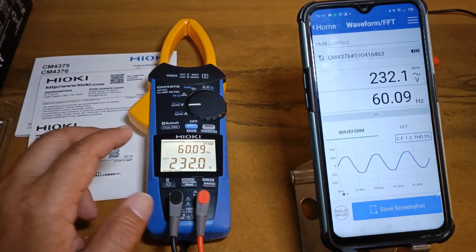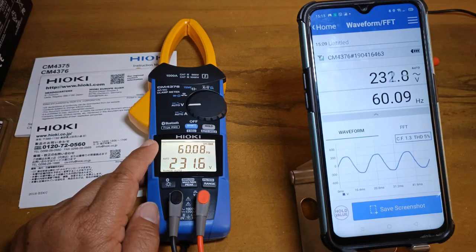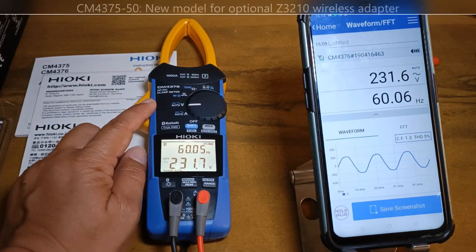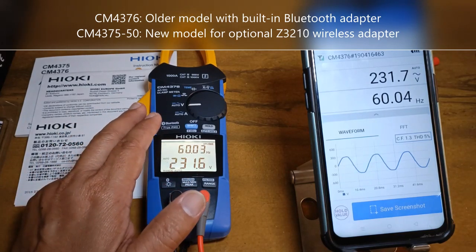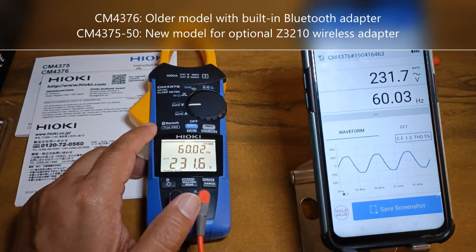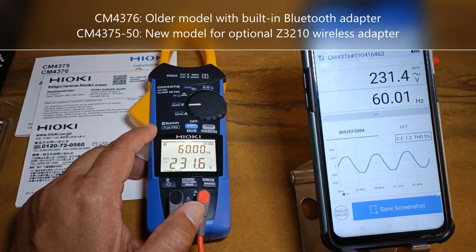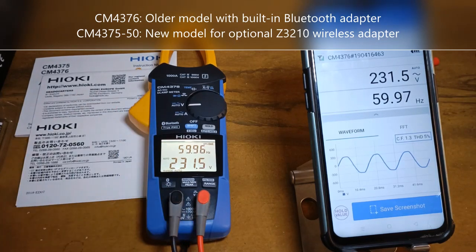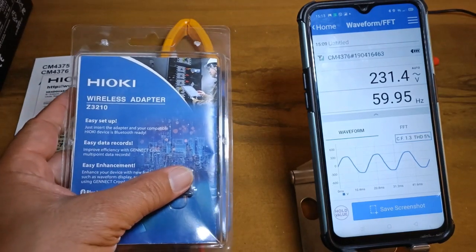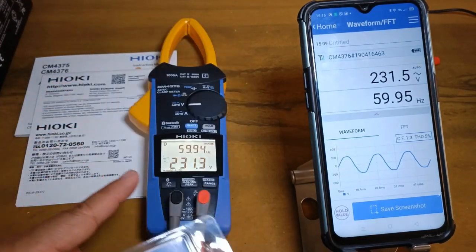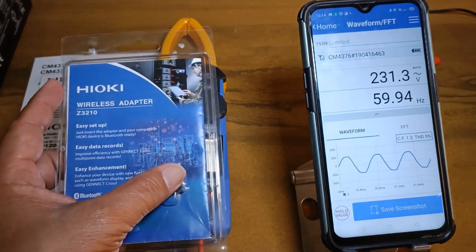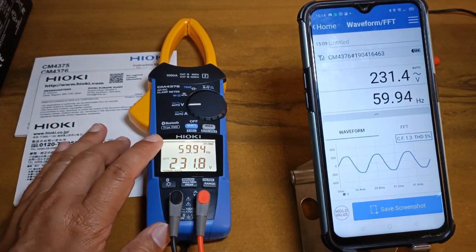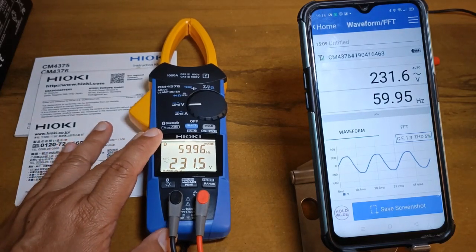If you search for the Hioki CM4376 at Hioki's website you will see this but it says there that this is discontinued and replaced by the CM4375-50. I think the main difference between the two is that in the CM4375-50 it has an optional wireless adapter functionality which combines both the Bluetooth functionality and the direct to Excel functionality. It is enabled by this particular wireless adapter Z3210. Now the Z3210 cannot be installed in the 4376 but this can be installed in the 4375-50, so the newer model is capable of both the Genect Cross App communication and also the direct to Excel functionality.